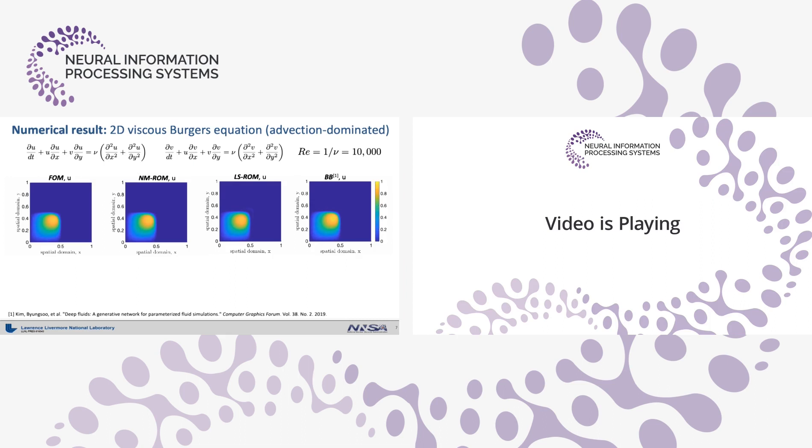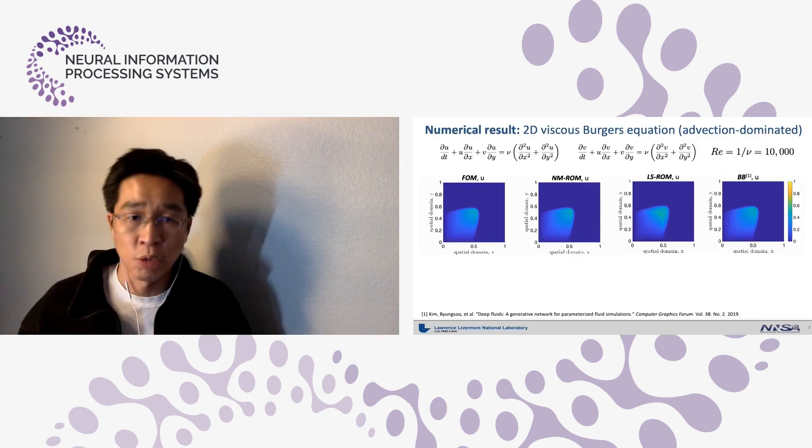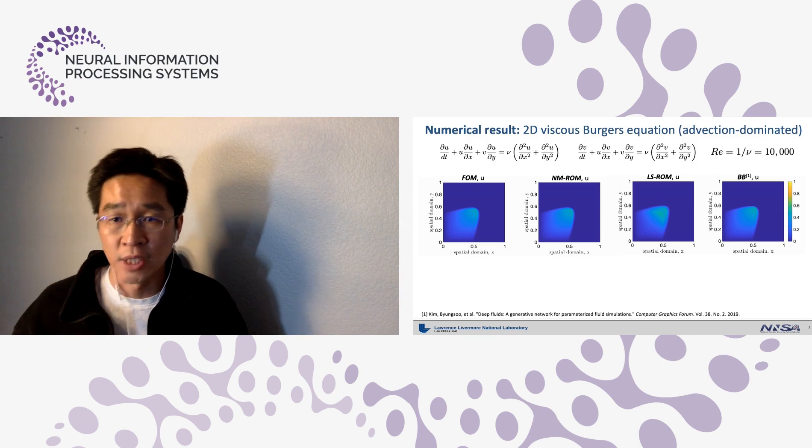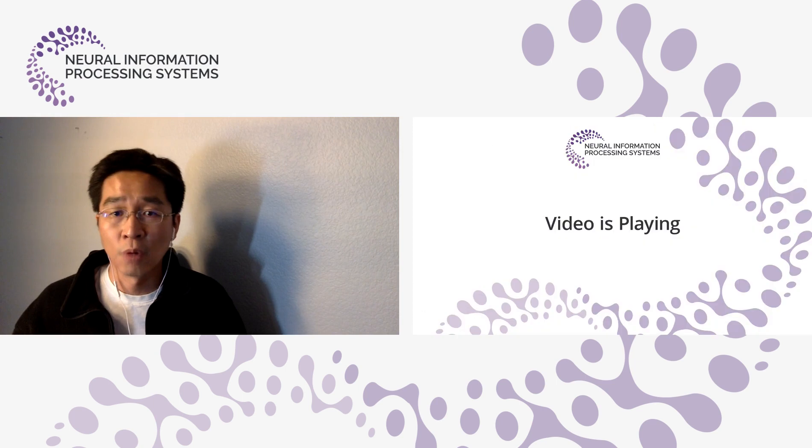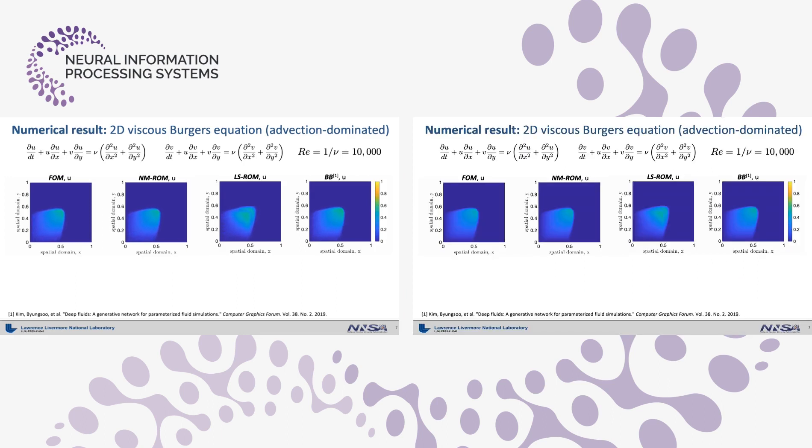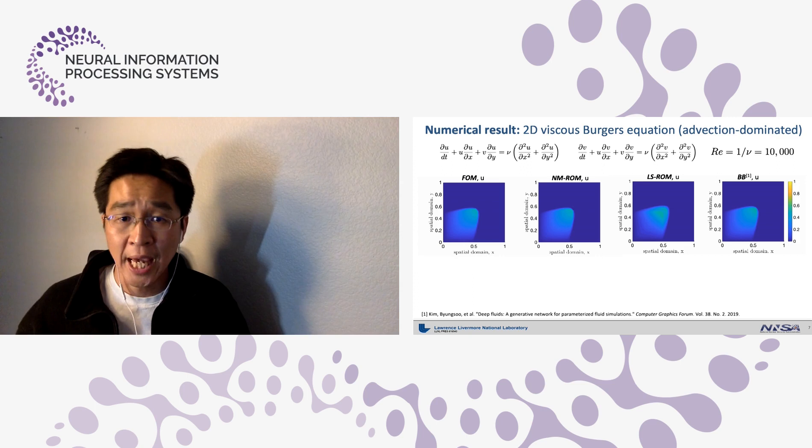Here we compare the performance of various surrogate models in an advection-dominated 2D viscous Burgers equation, which is known to be a hard problem for ROMs to achieve a good accuracy. As you can see from the movies, NMROM and FOM are almost identical in eyeball norm, while LSROM shows fictitious oscillations in front of the shock wave. The BB approach looks okay in eyeball norm.